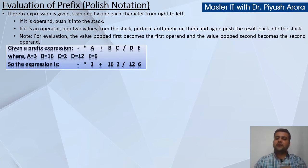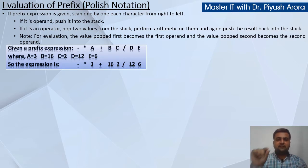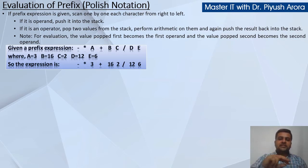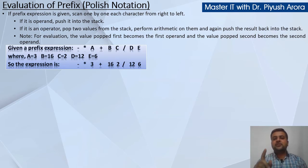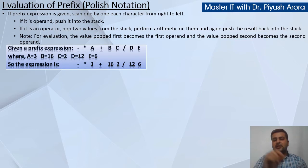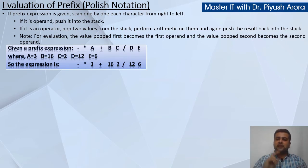For evaluation of prefix: the value popped first becomes the first operand, and the value popped second becomes the second operand. Ye wala point aapka evaluation of postfix se ulta hai. Evaluation of postfix ke andar jo value pehle pop ki jati thi, use expression ka second operand banaya jata tha, aur jise second pop kiya jata tha, use first operand banana hota tha. Evaluation of prefix mein jise pehle pop kijiye use pehla operand likhiye, jise second pop karte hain use second operand likhiye, beech mein operator rakhke aap evaluate karke, wapas se us answer ko stack mein push kar dijiye.